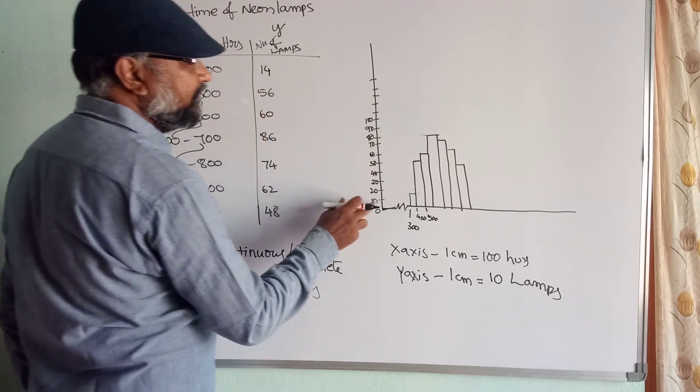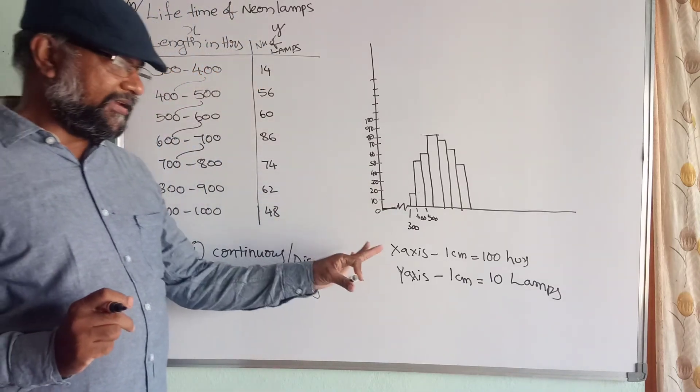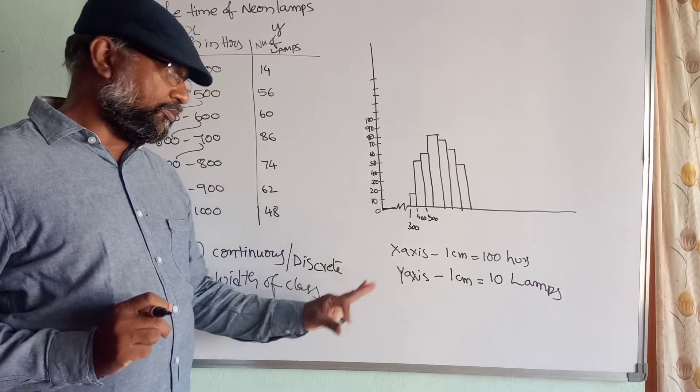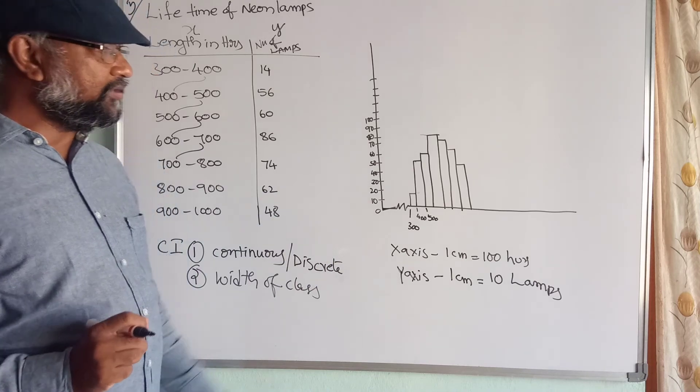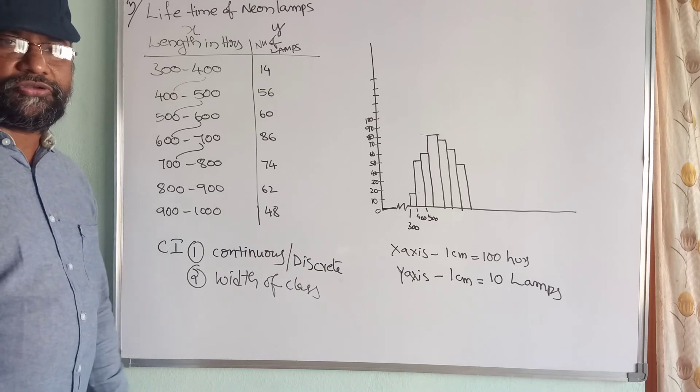It's 14 lamps. That means just 10 above. So likewise, you can create the scale. The scale will not be the same for all the problems. It depends upon the data given. So it's a simple question. Then you can draw that graph. That's all.